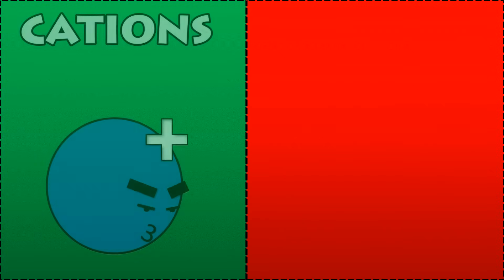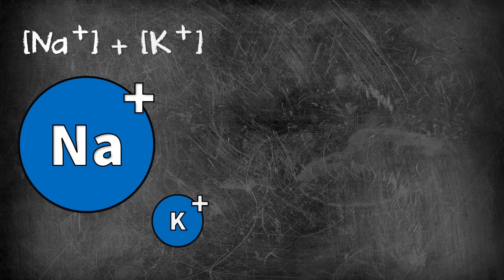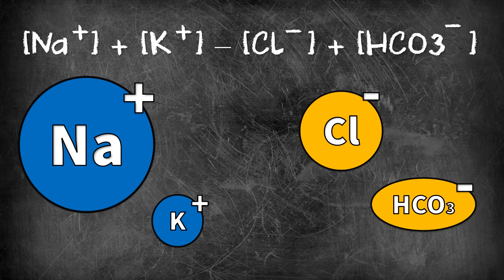The anion gap is a measurement of the balance between cations — those are positively charged particles — and anions, negatively charged particles. It's an important diagnostic tool when you're looking at metabolic acidosis. We'll come back to its relevance to clinical practice shortly. But first, let's talk about the equation itself. It's sodium plus potassium minus chloride plus bicarbonate.